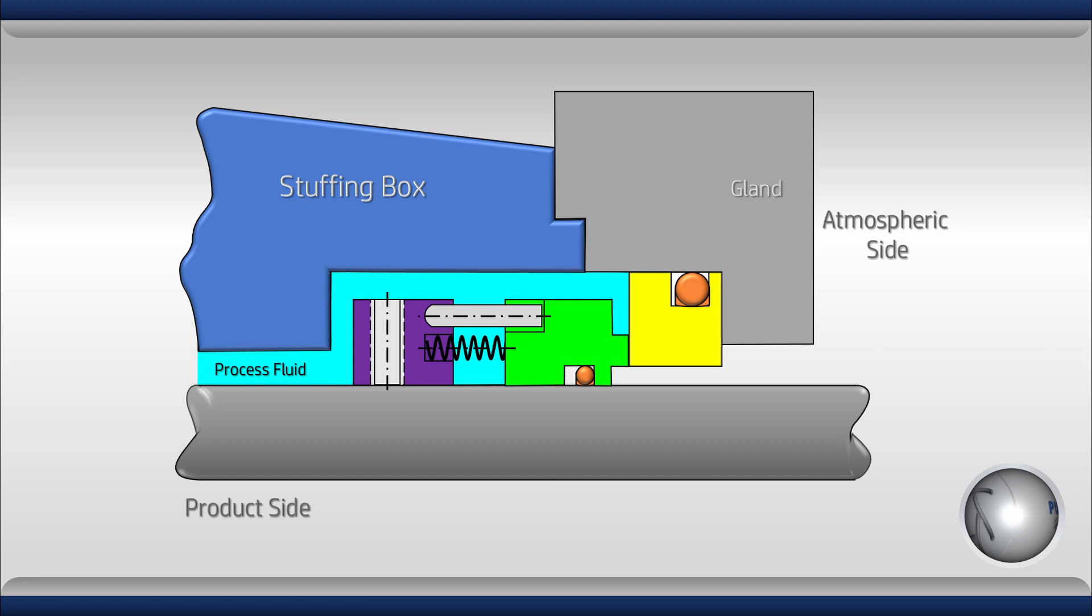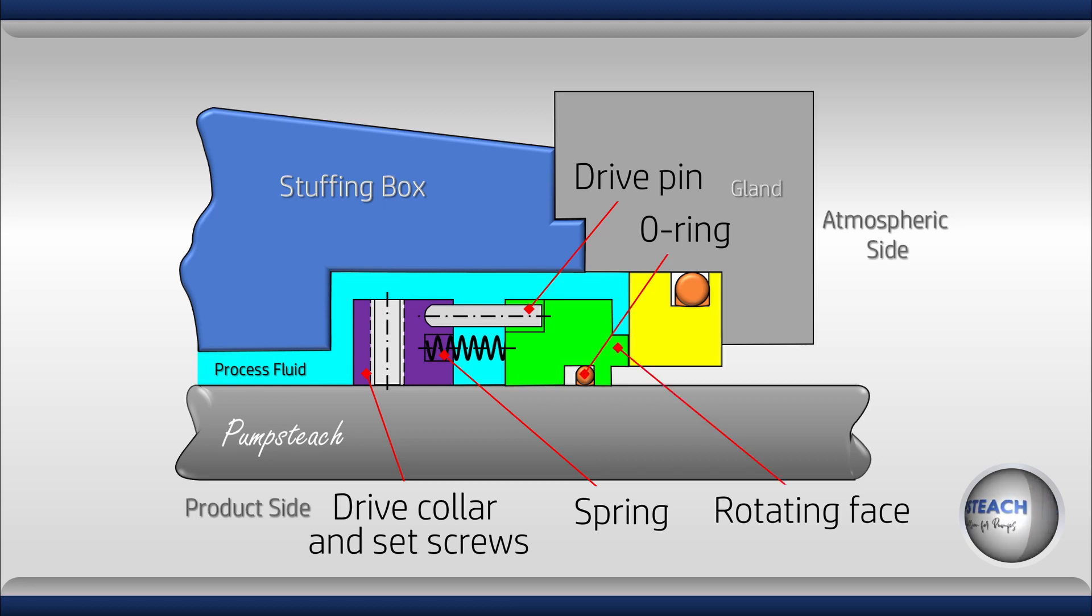For a start, here we have a simple mechanical seal arrangement with the essential elements. I'm talking about the seal chamber, drive collar and set screws, spring and drive pin, rotating face and o-ring, stationary face and o-ring, the gland and the rotary shaft.